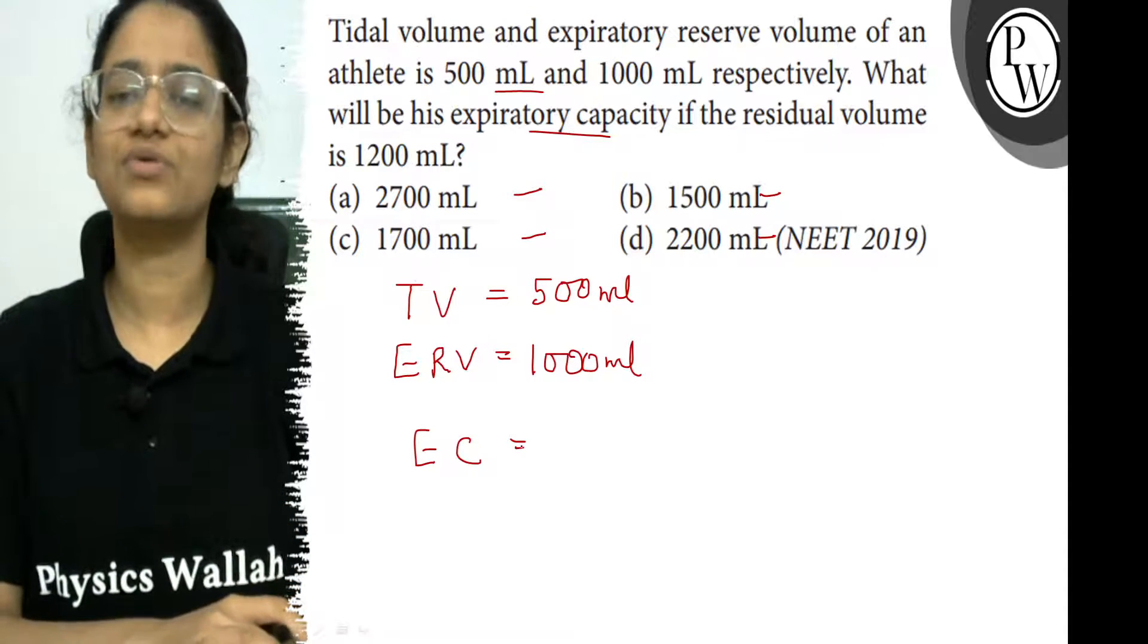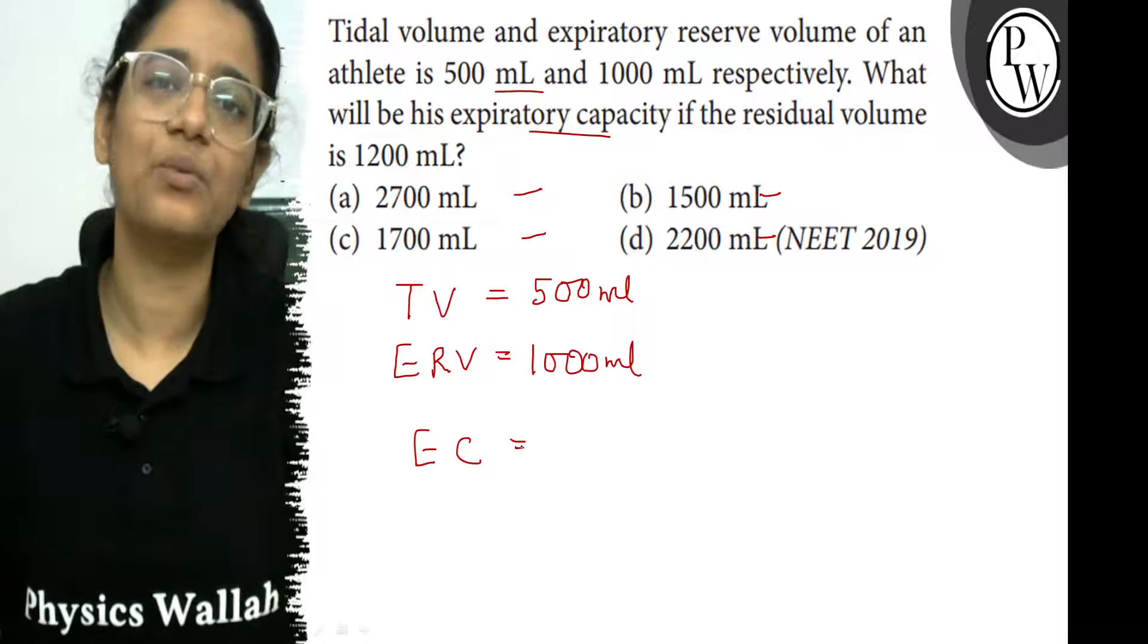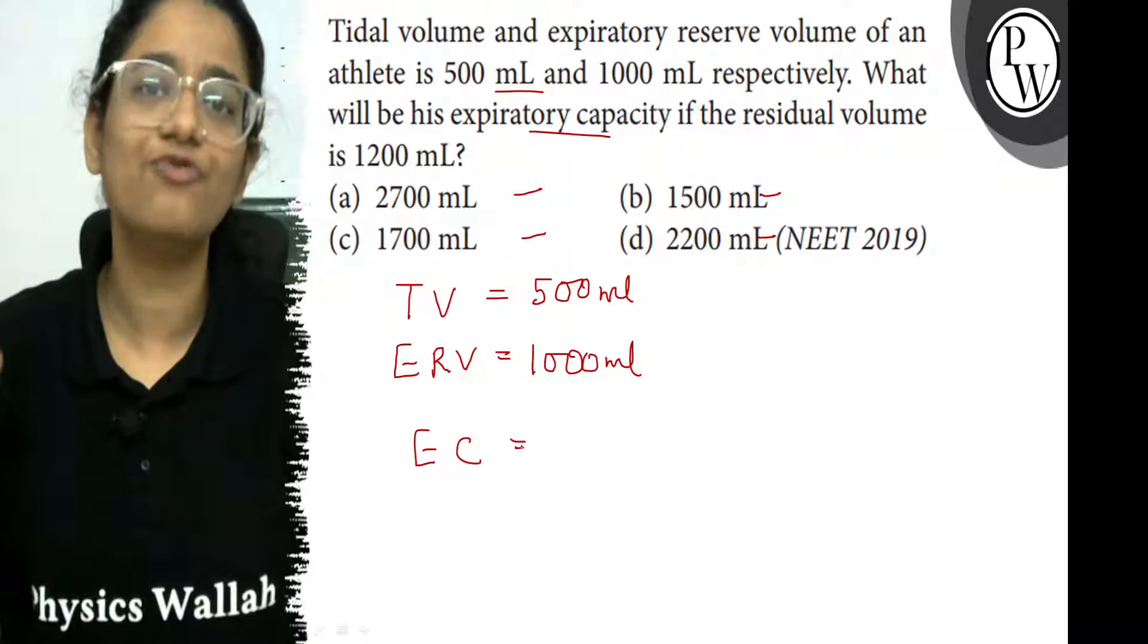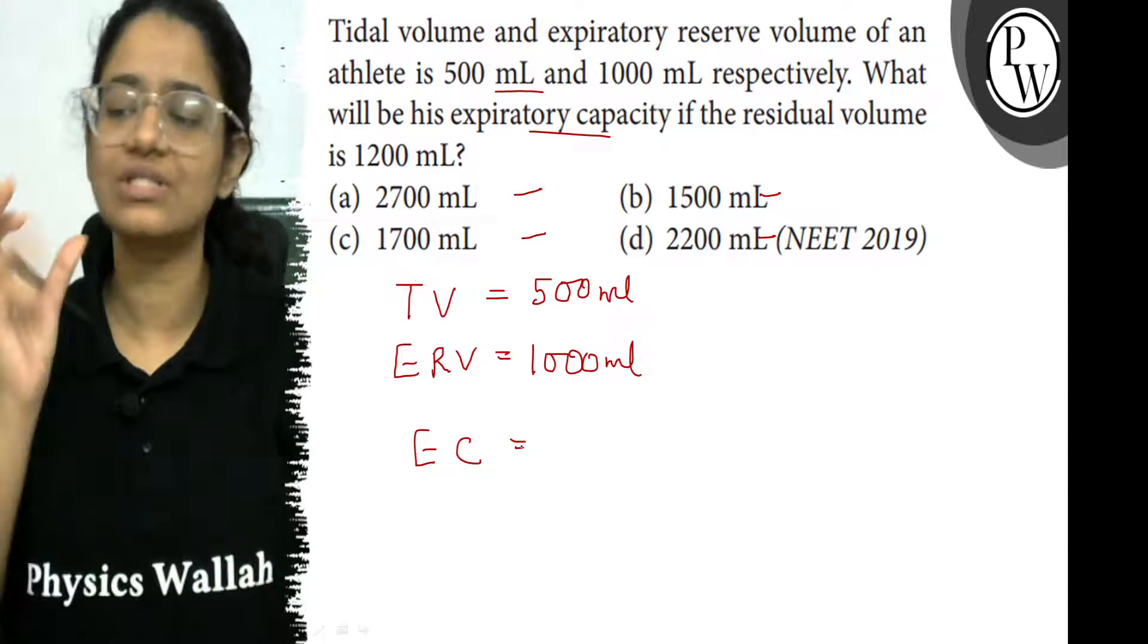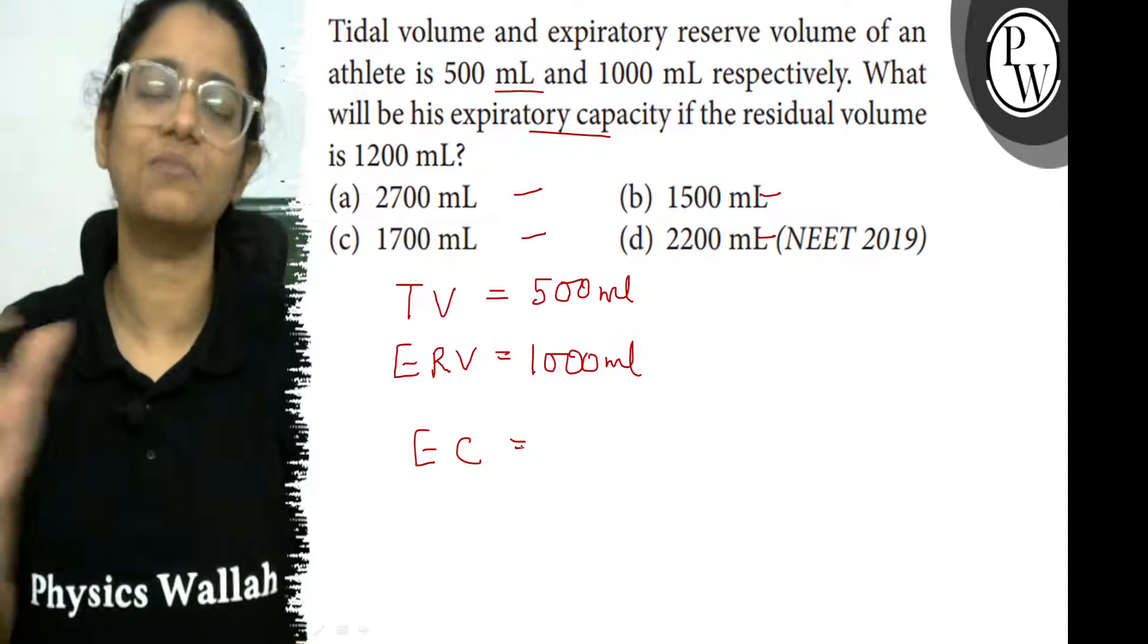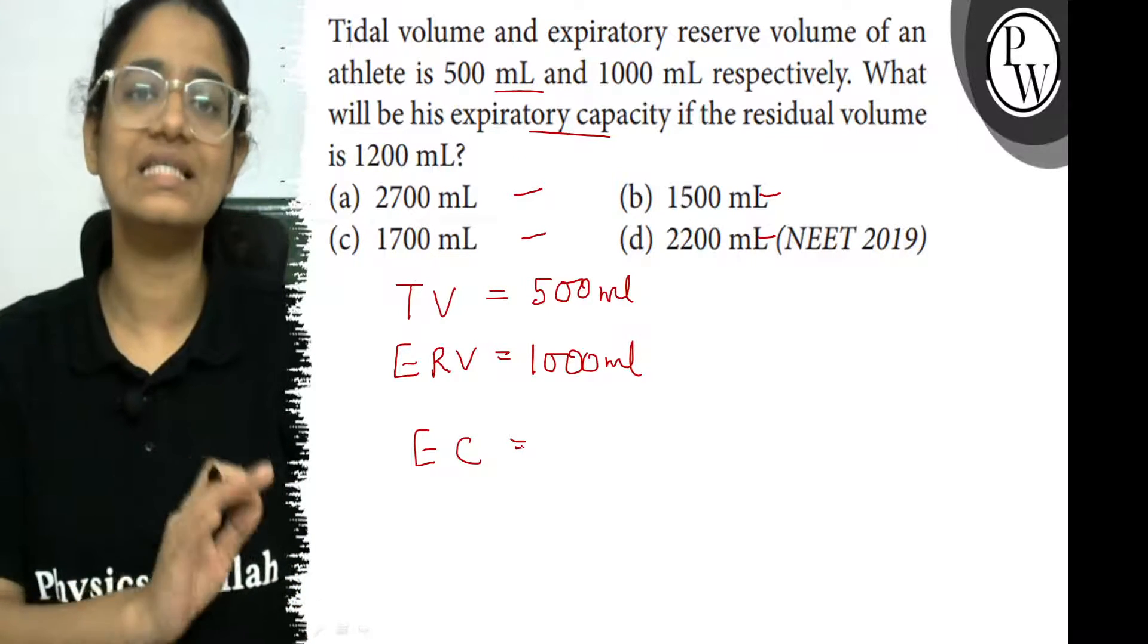What is expiratory reserve volume? So expiratory reserve volume is the amount of additional air which you can expire by a forceful respiration. Toh bhoat zor se jab ap saans chholte ho, toh what is that additional amount of air that can be expired? That is ERV which is given as 1000 ml. And you have to calculate EC.